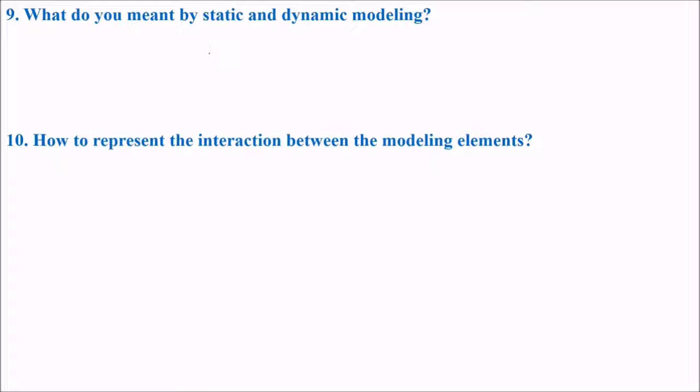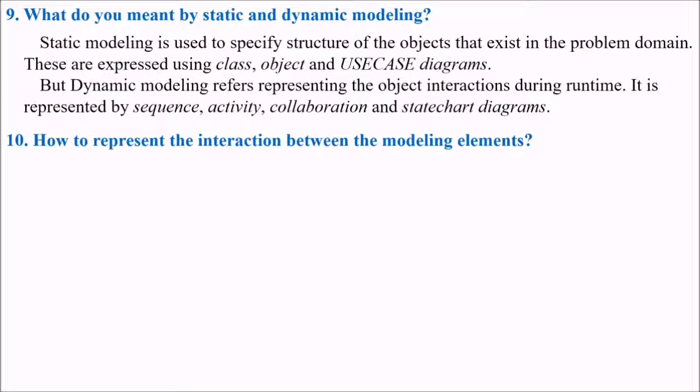What is meant by static and dynamic modeling? Static, you might be aware of UML, Unified Modeling Language. This is very much used now and important for your software development, design and requirement purposes. It has various diagrams. Previously it was 9, now we have 12. Static modeling is used to specify structure of the objects that exist in the problem domain. It is specifying the structure of the object that exists in the problem domain.